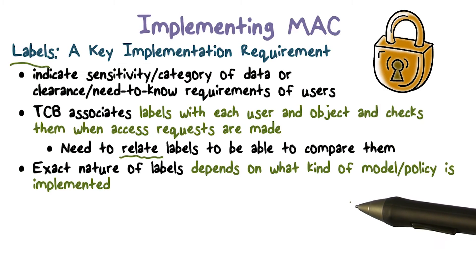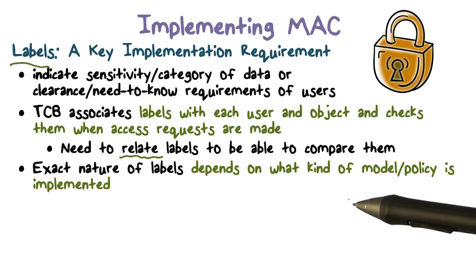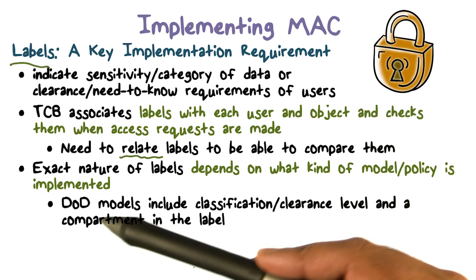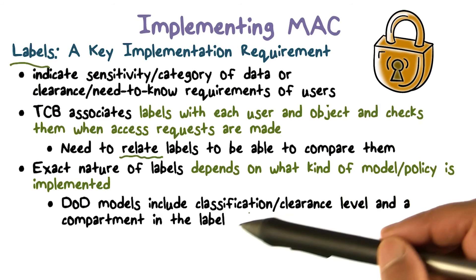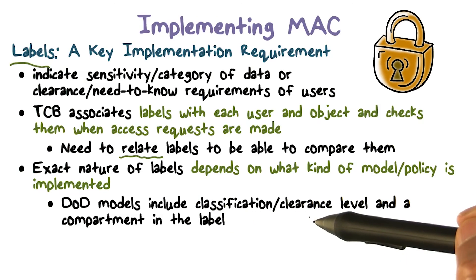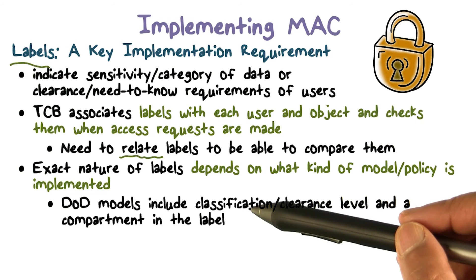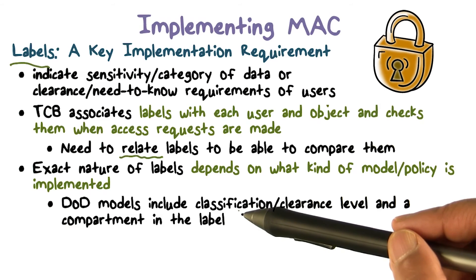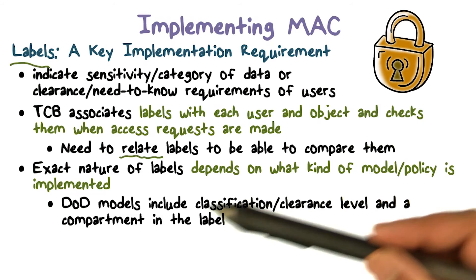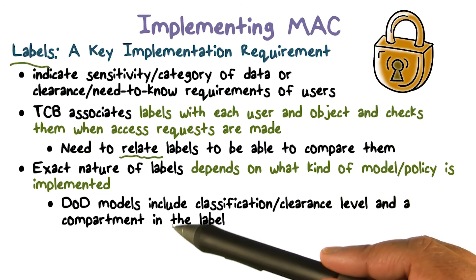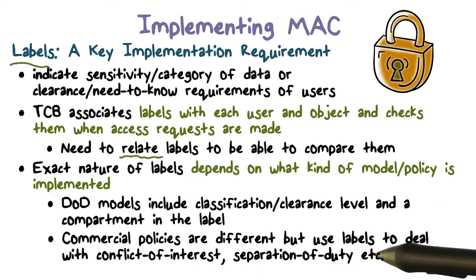A label goes with not just the document but also with the user. In the Department of Defense, the labels are going to include, for a user, their clearance level. For a document, the classification level at which the document is classified. And compartment is the category we're talking about — what kind of information is contained in the document.